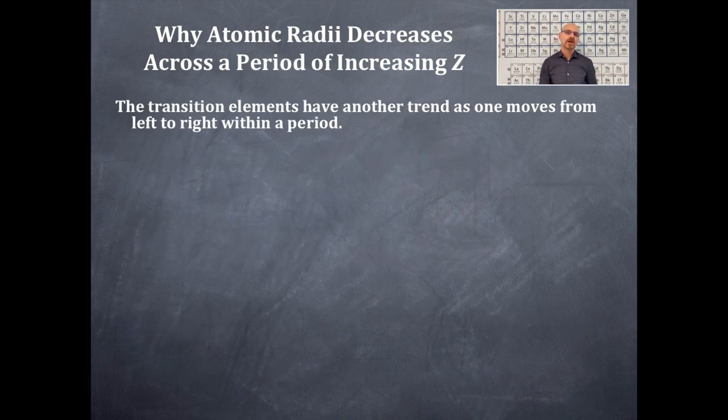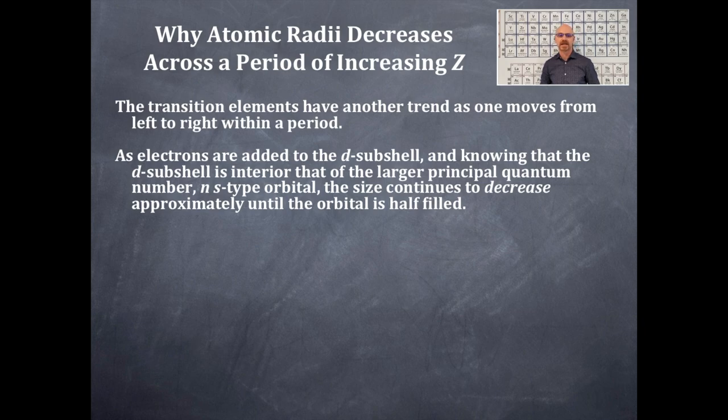The transition elements have another trend as one moves from left to right within a period. As electrons are added to the d-subshell, and knowing that the d-subshell is interior to that of the larger principal quantum number n s-type orbital—for example, 4s then 3d that corresponds to it.